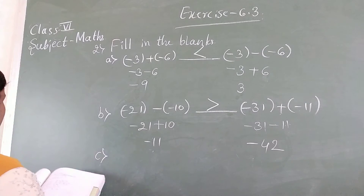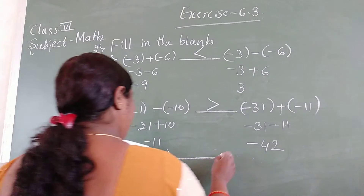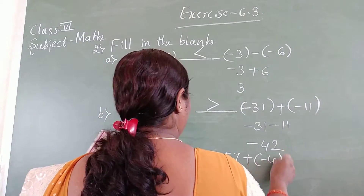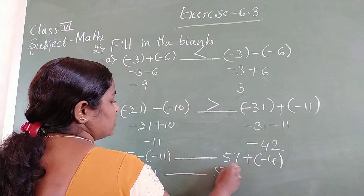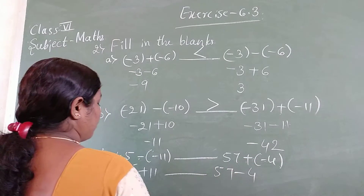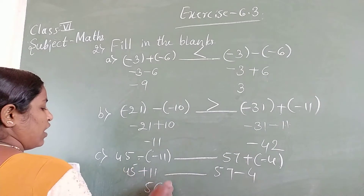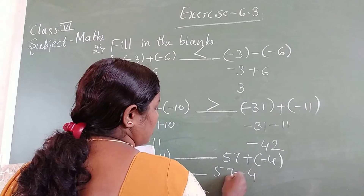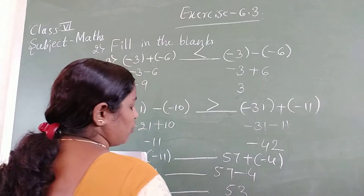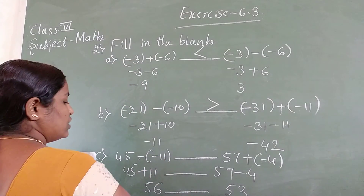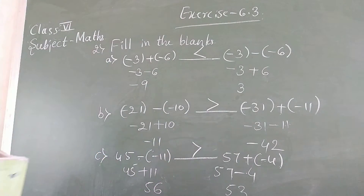Part C: 45 minus minus 11, dash, 67 plus minus 4. Simplify: minus into minus gives plus 11, so 45 plus 11 equals 56. For 67 plus minus 4: different signs, subtract — 67 minus 4 equals 63. Wait — 53 is smaller than 56. So identify which is bigger and put the correct symbol.